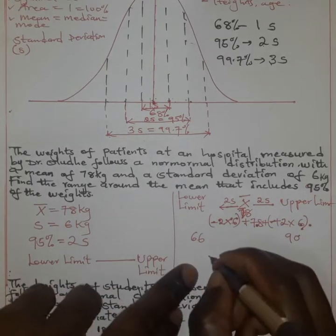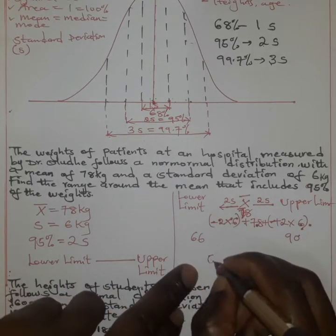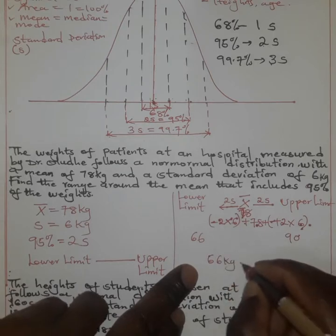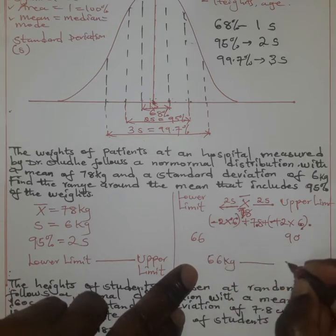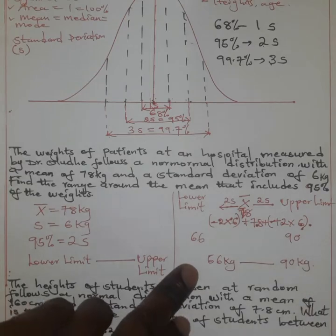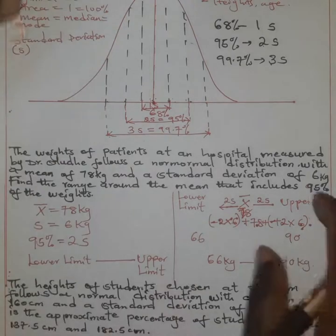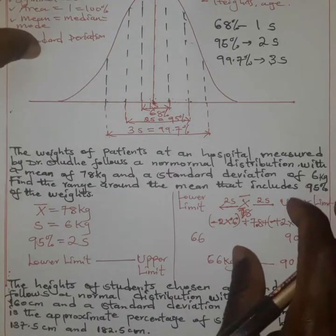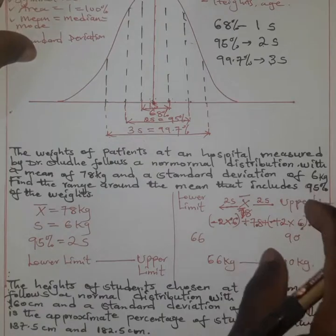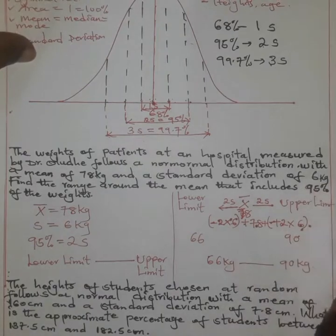So our range is 66 to 90 kilograms. And that is how we apply the empirical rule.